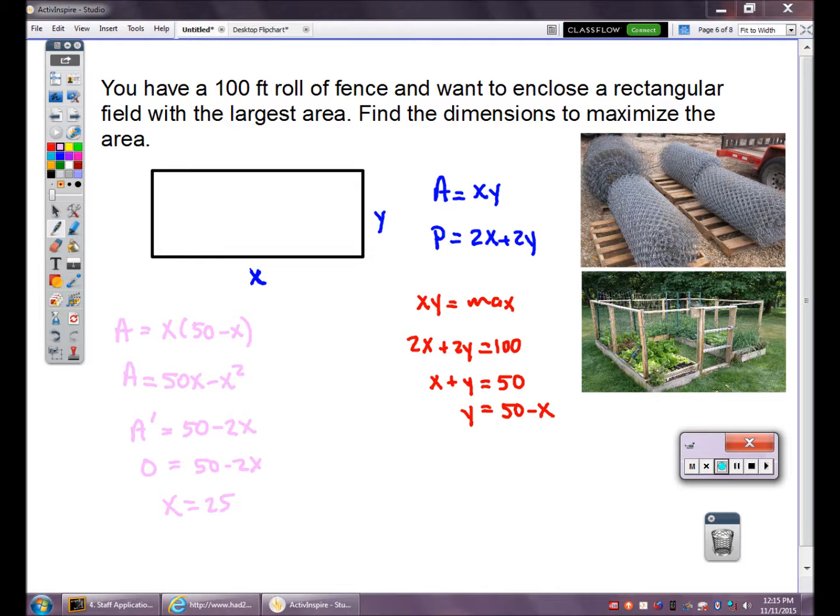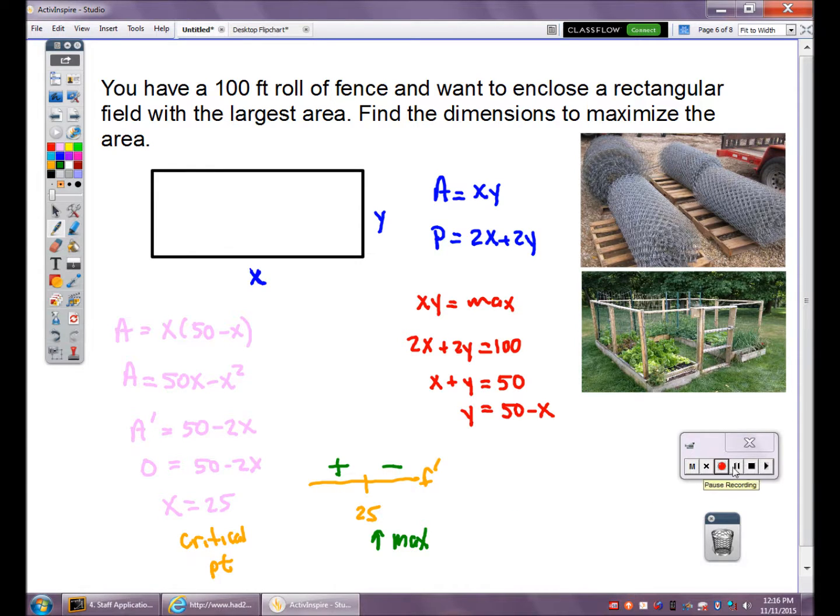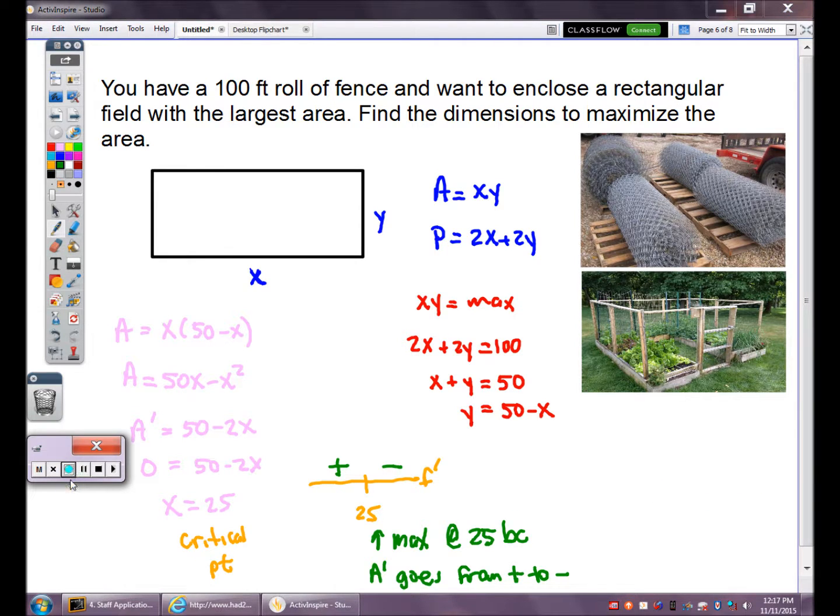X equals 25 is a critical point. I don't know if it's a max or a min, I have to verify this with a sign chart. Pick a point to the left of 25, pick a point to the right of 25, and plug them into F prime. Something to the left would be zero. 50 minus 2 times zero is positive. Something to the right will be negative. There's a max at 25 because the derivative goes from positive to negative.